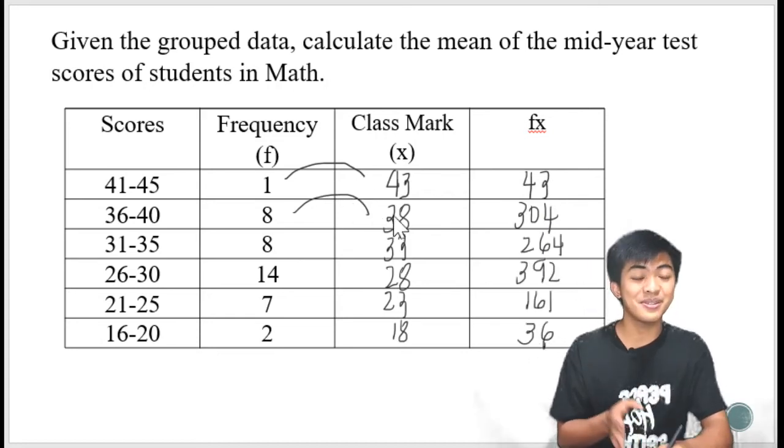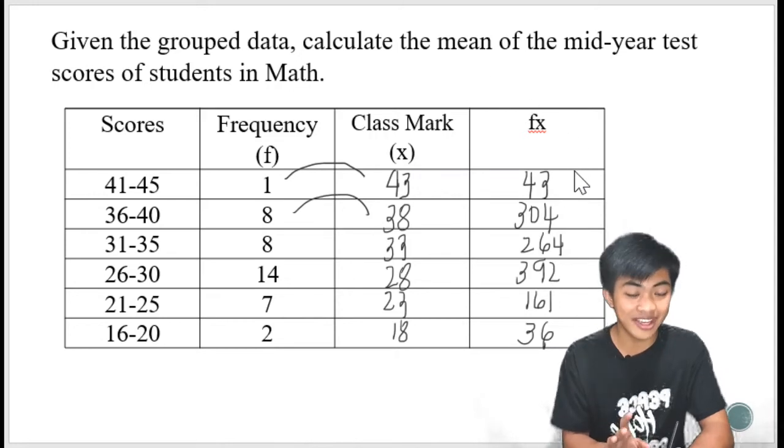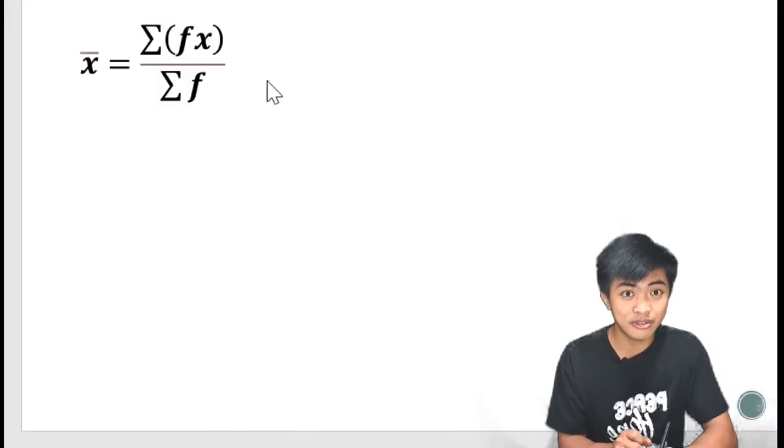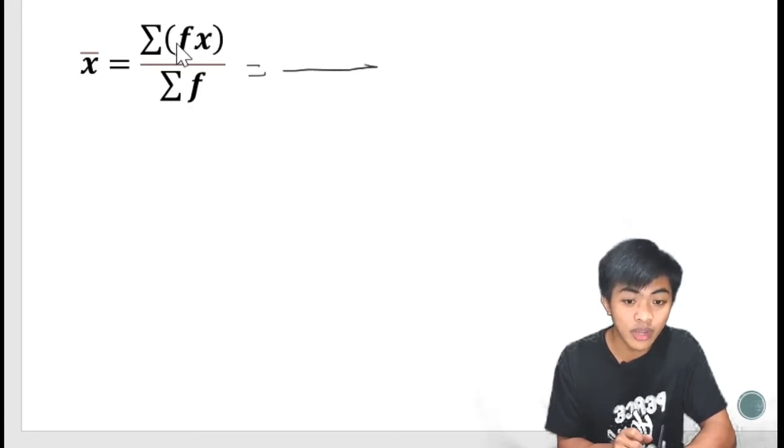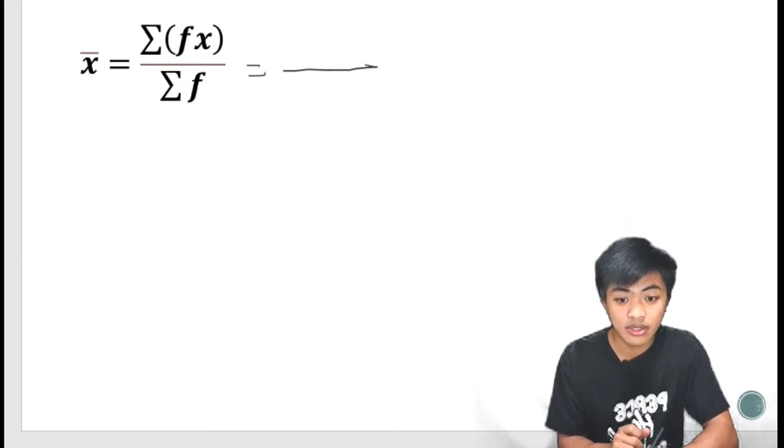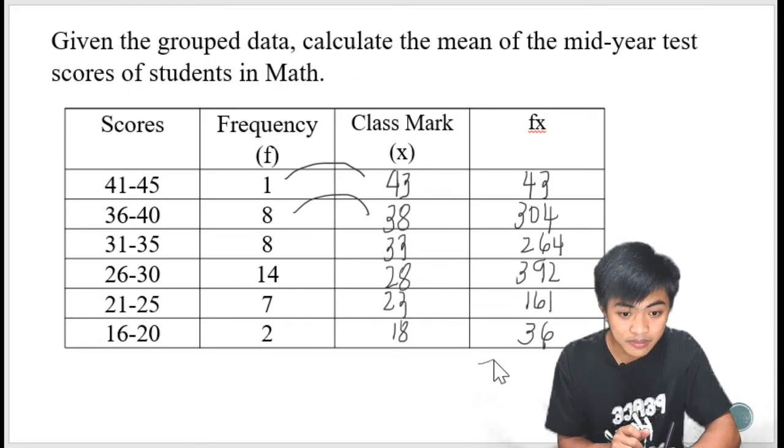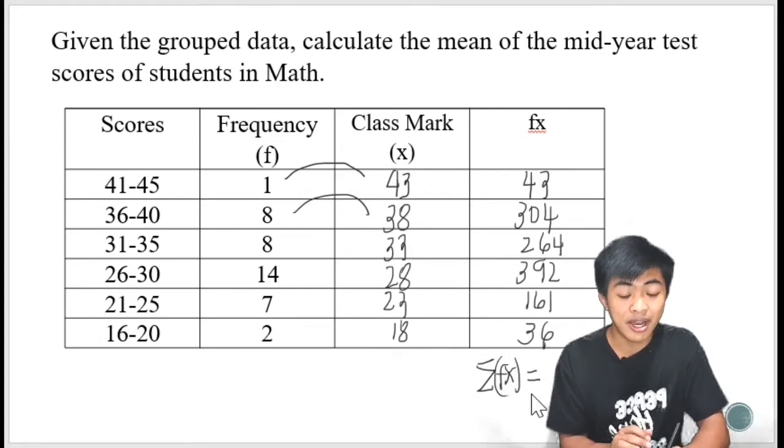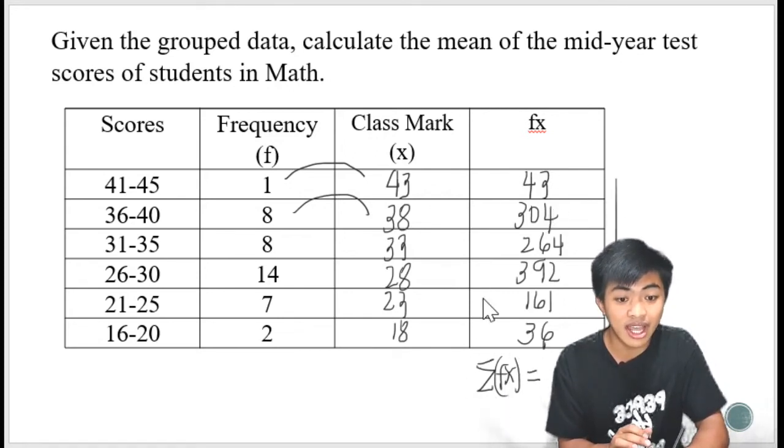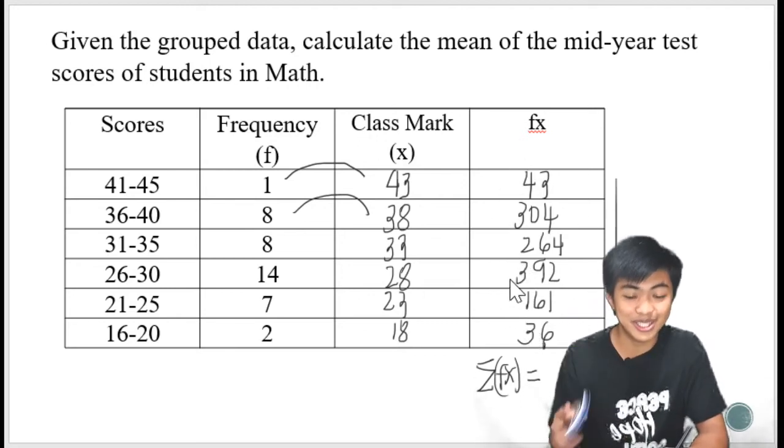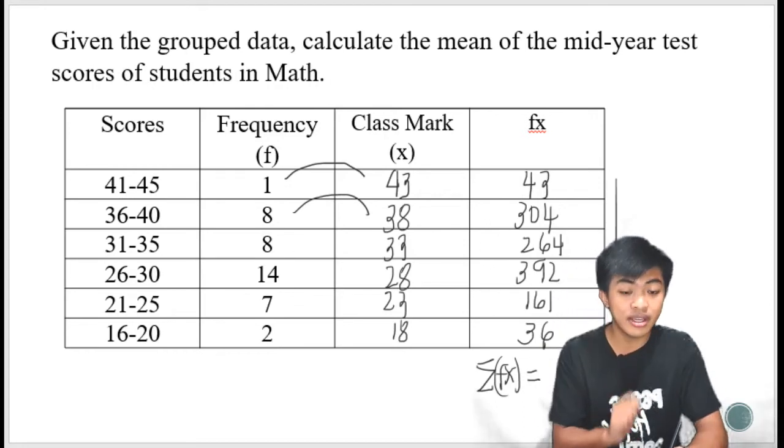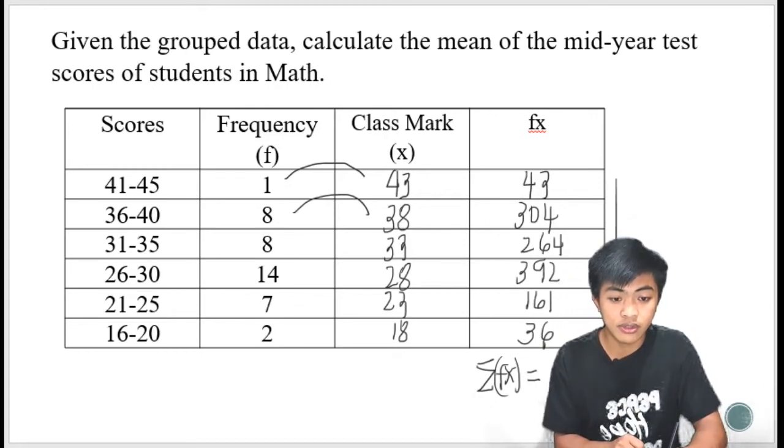Okay guys, so nakompleto na natin yung x at saka yung fx. Now we're going back to the formula. That is the summation of fx. Anong gagawin dito? We are going to add all the numbers, all the values, sa fx column. So i-add natin lahat to. Summation of fx. So para makuha yan, pag-addin lang natin lahat ng mga numbers na to. I'll just use my calculator. And the answer there is 1,200.